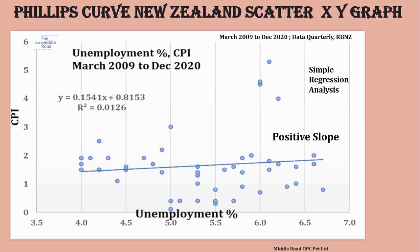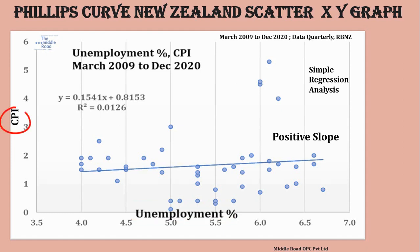We have taken the data and done a simple regression analysis. Simple regression analysis is important because it gives you an idea of causality — though this does not mean it is a 100 percent guarantee; there are many ways to check how true the analysis is. We've set up a simple bivariate scatter plot where x is the independent variable, which is unemployment, and CPI — inflation — is the dependent variable. When you run this regression, you get a positive slope, not a negative slope, and an equation.